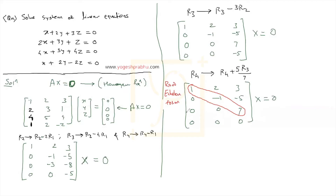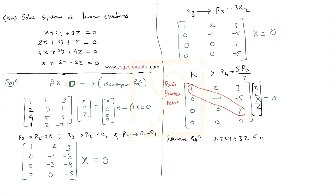Now we rewrite the equations from this echelon matrix. Multiplying each row by the column vector [x, y, z], the first equation is x plus 2y plus 3z equals 0, the second equation is minus y minus 5z equals 0, and the third equation is 7z equals 0.